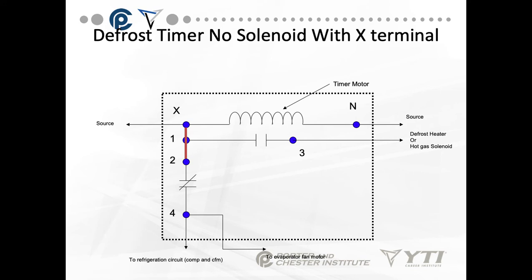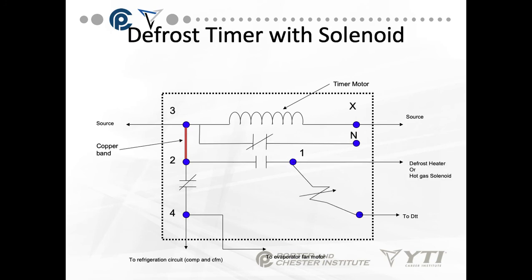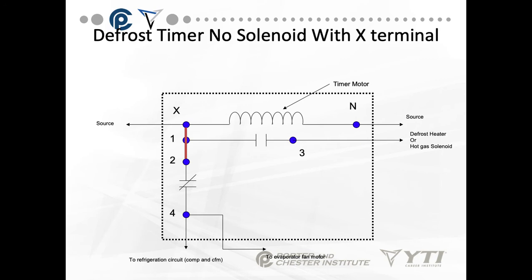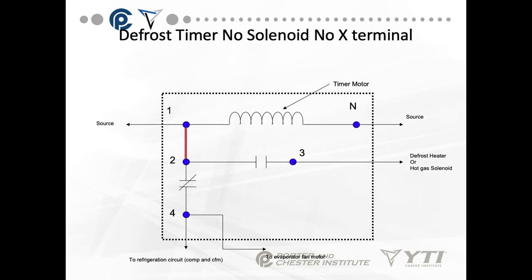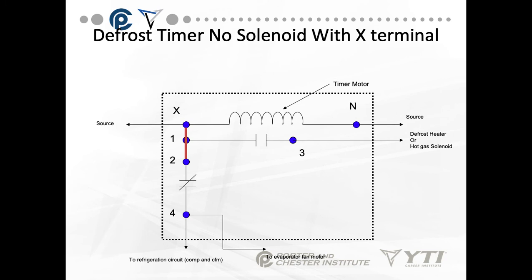This is a defrost timer with no solenoid, but it still has an X terminal. You really have to watch your terminal designations. Notice the solenoid that would normally be here is missing. There's no defrost termination solenoid, so where the previous clock would allow a defrost termination — pulling the defrost clock out of defrost mode when the coil is above freezing — this one will run the full length of defrost, whatever you have it set at. Different manufacturer, different pin designations, no X terminal.